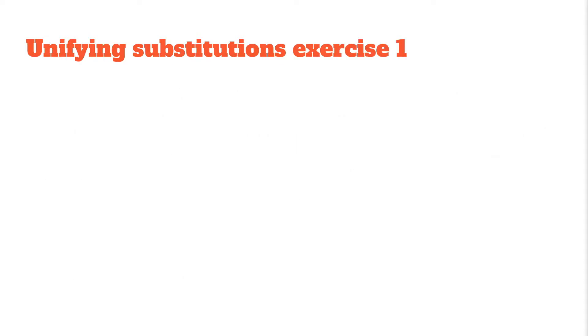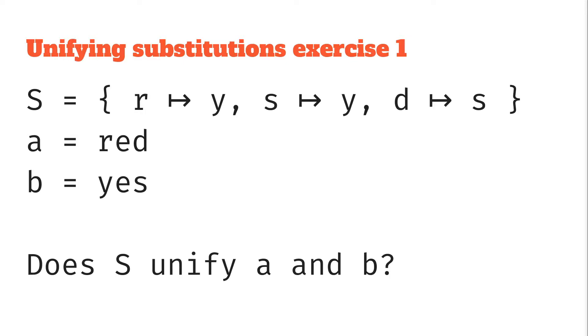So let's have a look at an exercise. We might have this substitution which maps R to Y, S to Y, and D to S, and we have strings A is red and B is yes, and the question we're trying to answer is does S unify A and B? So to answer that we're going to find out what happens when we apply the substitution to both A and B respectively.